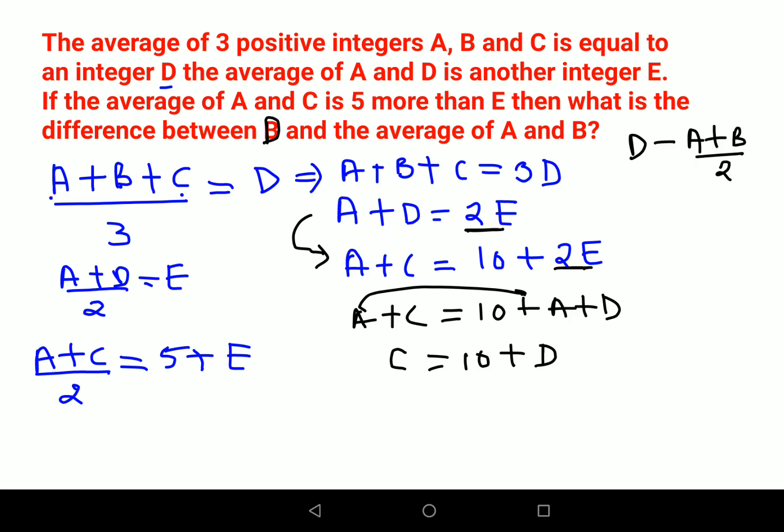Let's put this value of C into the first equation. I have A+B+C, so instead of C I can write 10+D. So A+B+10+D = 3D. Taking D to the other side, I have A+B+10 = 2D.